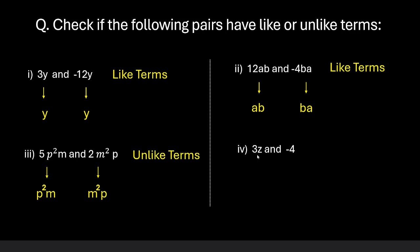Let us look at the last part. 3z. The variable here is z which has a power of 1 and this is -4. It has no variable, it is a constant. So again these are unlike terms.